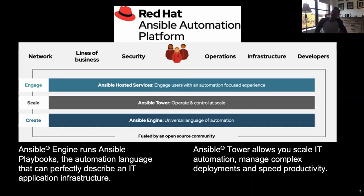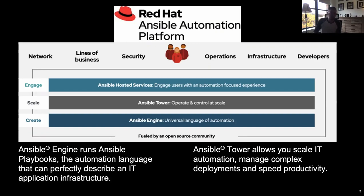Ansible Tower also gives you a holistic view of all automation happening across the enterprise — so if anything fails, you have a clear view of where that's happened and can kick off additional automation to fix those failures. Regarding Ansible hosted services, from our perspective, mainframe customers expect enterprise-level support for any community content, given mission-critical workloads and applications running on our systems.